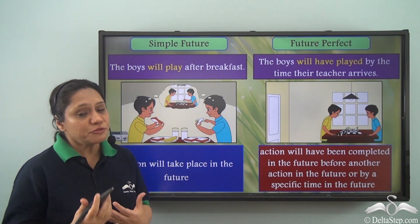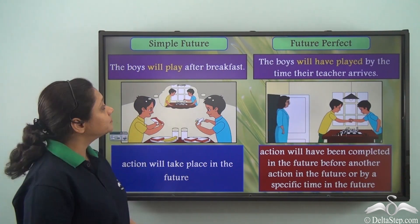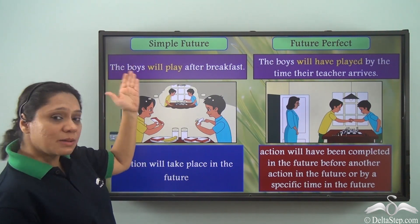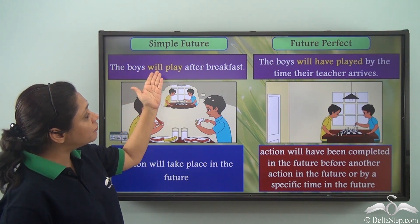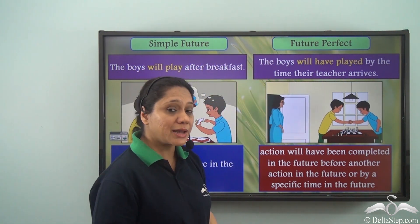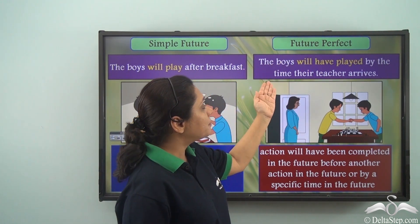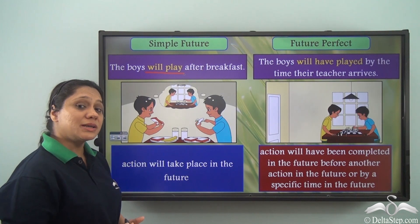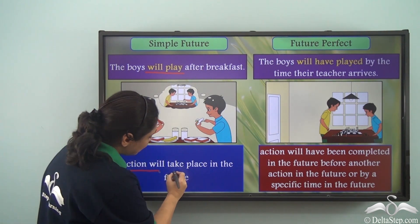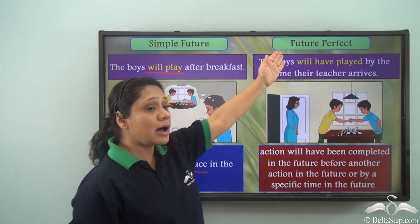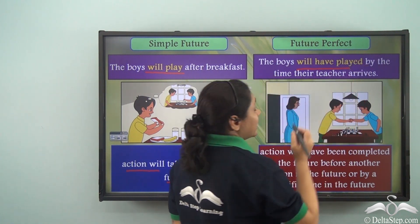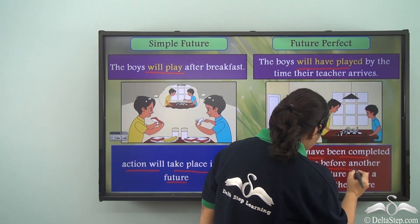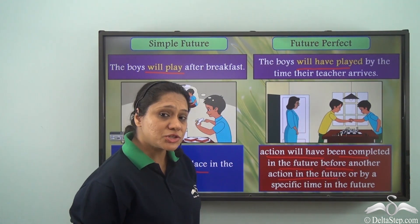Let us revise the differences between the future tenses. In the simple future, our sentence is 'The boys will play after breakfast,' and in the future perfect, our sentence is 'The boys will have played by the time the teacher arrives.' The verb 'will play' in the simple future tells us that an action will take place in the future, whereas 'will have played' in the future perfect tells us that an action will have been completed in the future before another action in the future.